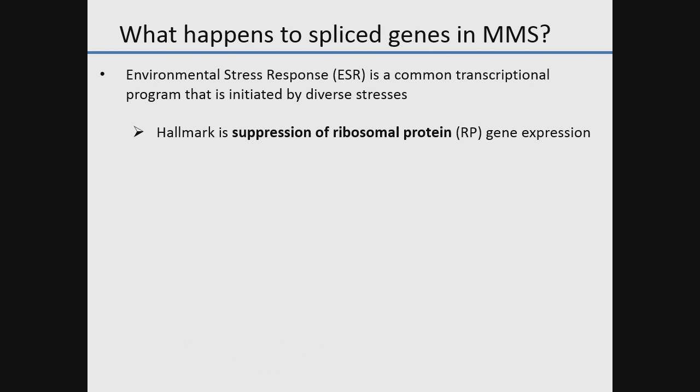Why would a splicing factor do this? There is a characteristic transcriptional program that takes place after stress called the environmental stress response, defined by Audrey Gash in the early 2000s. One hallmark is the suppression of ribosomal protein genes. As you may know, ribosomal protein genes are specifically enriched for containing introns and are highly expressed, such that 9 out of 10 splicing reactions in yeast involve a transcript from a ribosomal protein gene.